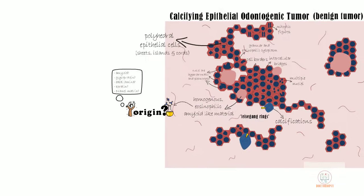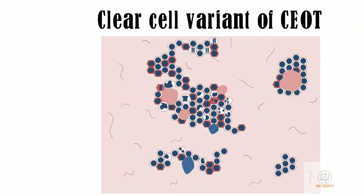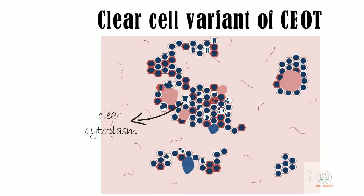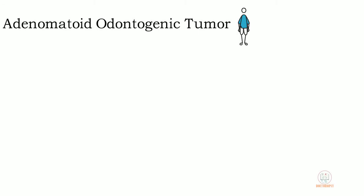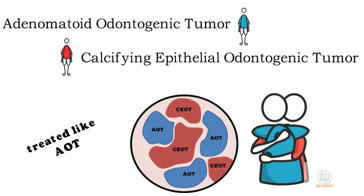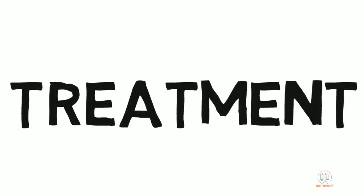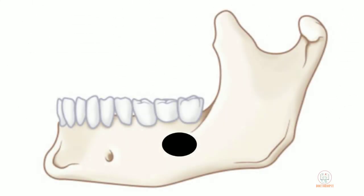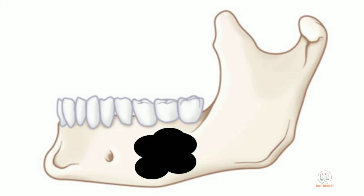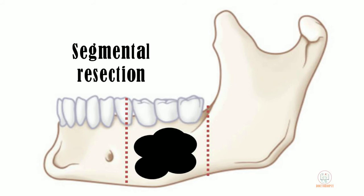A clear cell variant of CEOT is known, which has epithelial cells with clear cytoplasm instead of being eosinophilic. Combined lesions of adenomatoid odontogenic tumour and calcifying epithelial odontogenic tumour have been reported where histologically both tumours are seen together. The treatment of CEOT is governed by the size of the lesion — small lesions may be treated by enucleation, while larger lesions are treated by en-block or segmental resection.